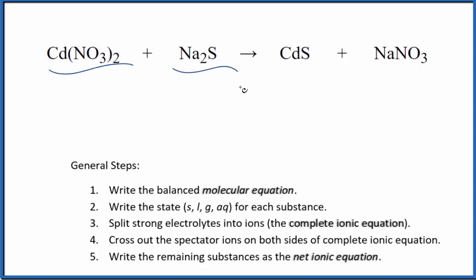The first thing we need to do with net ionic equations is balance the molecular equation. That's right here. So I can see that I have cadmium, two nitrates here and only one here. Let's put a two in front of the sodium nitrate. That balances the nitrate ions. We have two on each side.